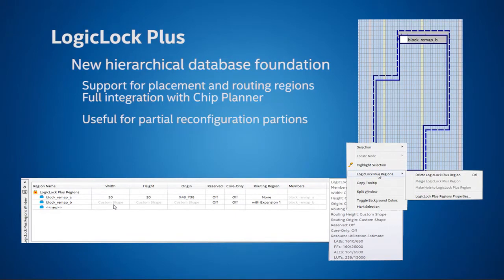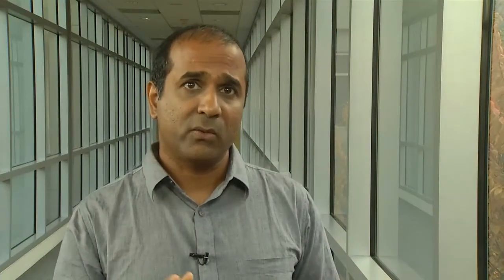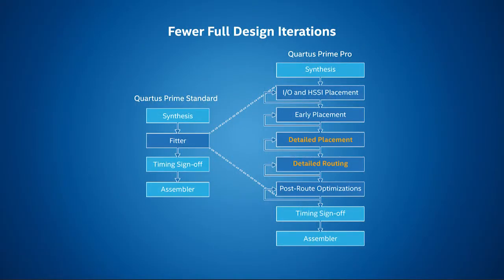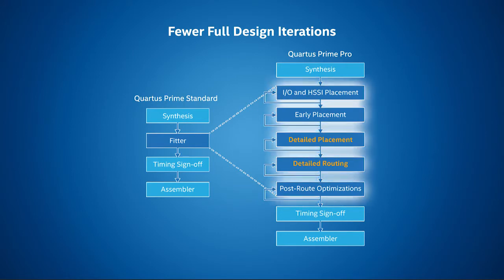Designs using partial reconfiguration are a big beneficiary of this approach. For some time now, Quartus Prime has evolved innovative approaches to incremental planning and design. The standard fitter is now divided into five stages. Blueprint reduced the number of iterations needed to achieve logic placement of I/O by up to 10x. Early placement, detailed placement, detailed routing, and post-route are the four other stages.